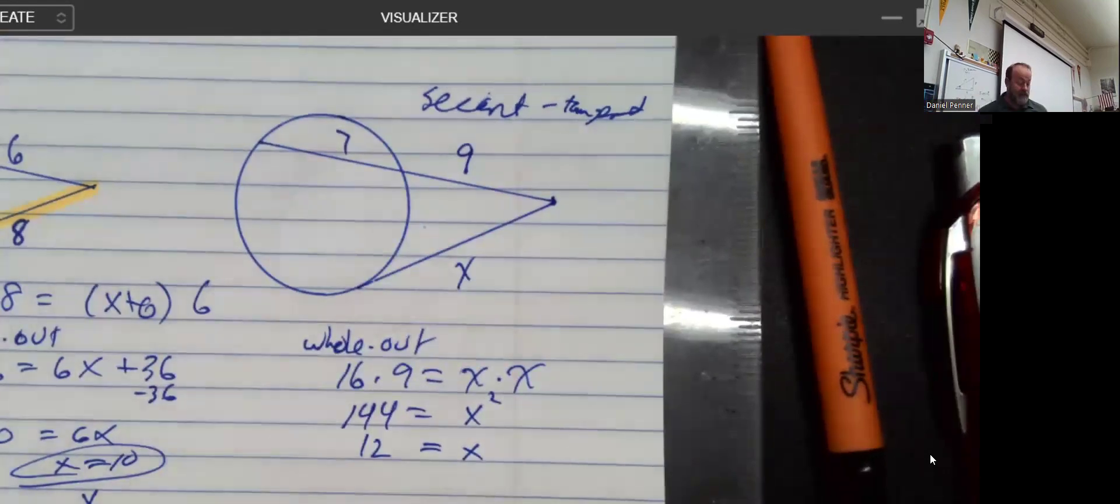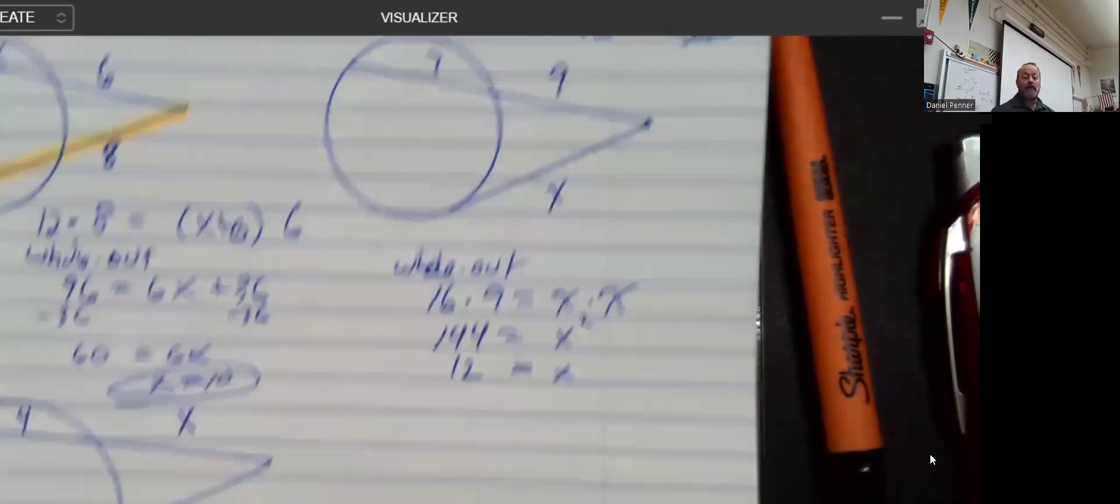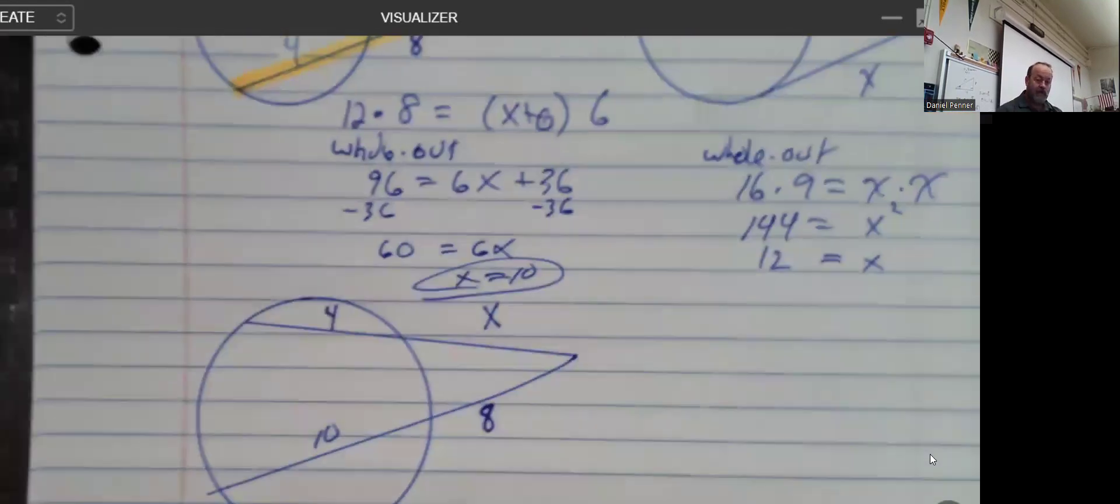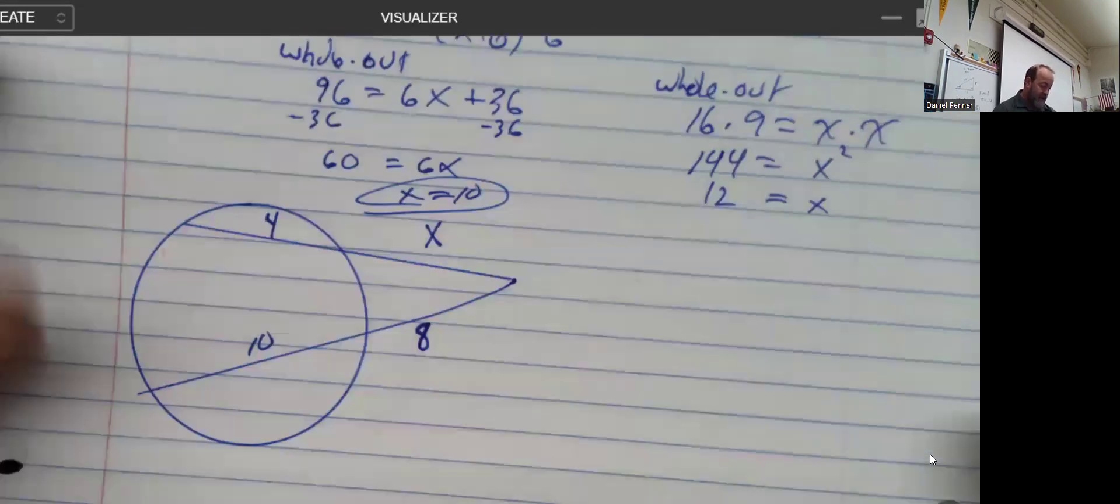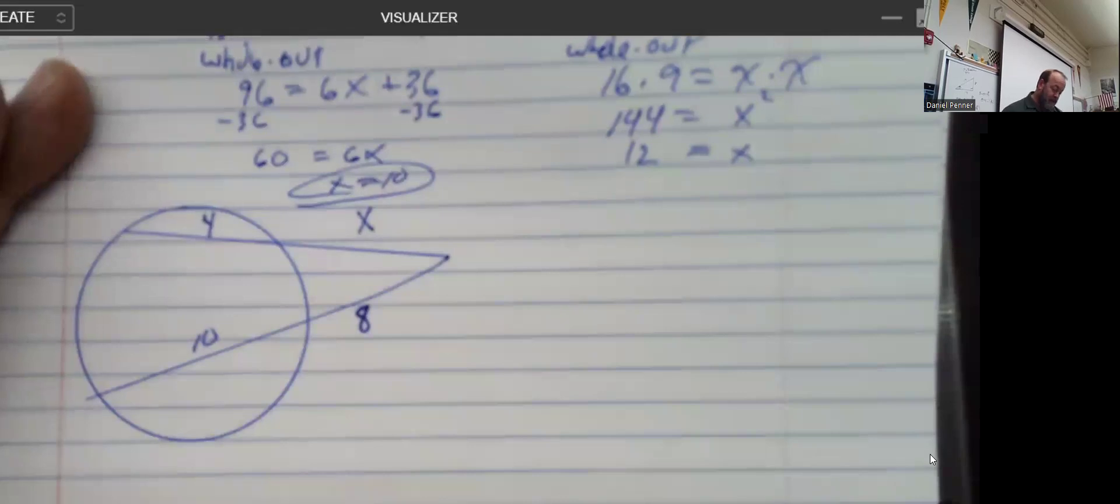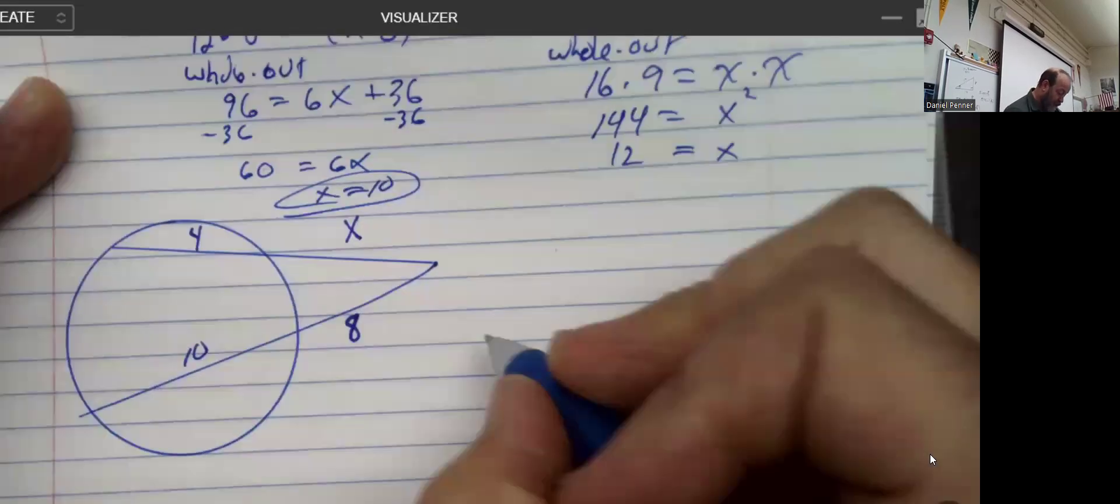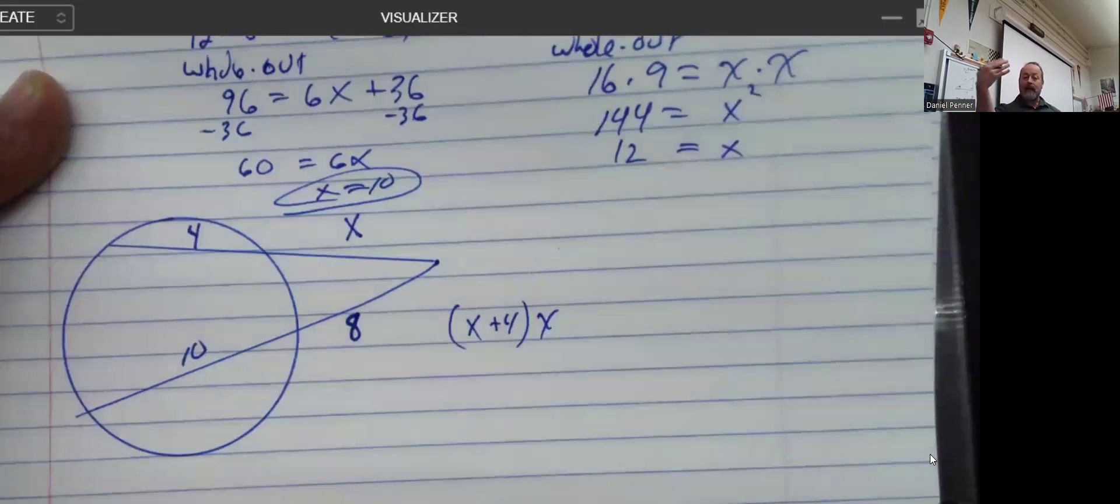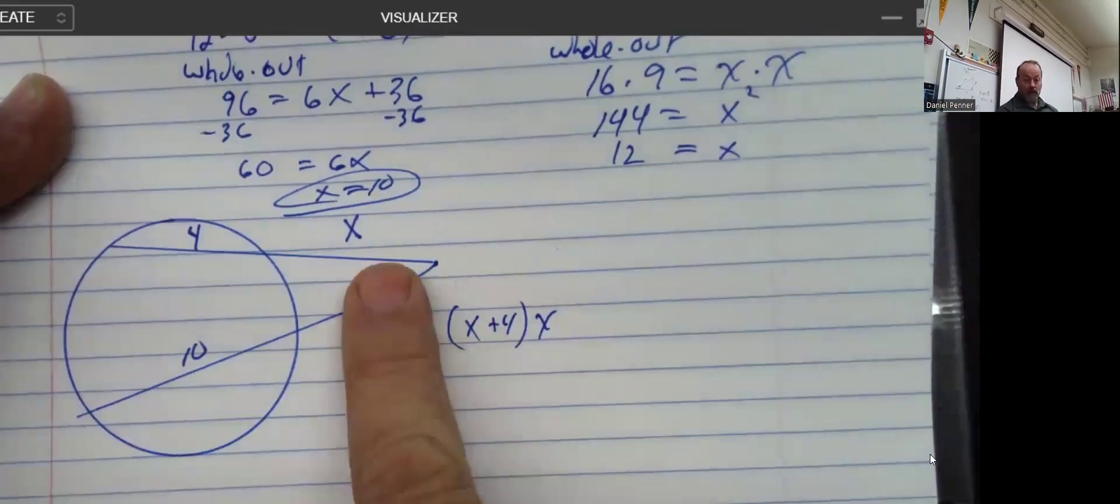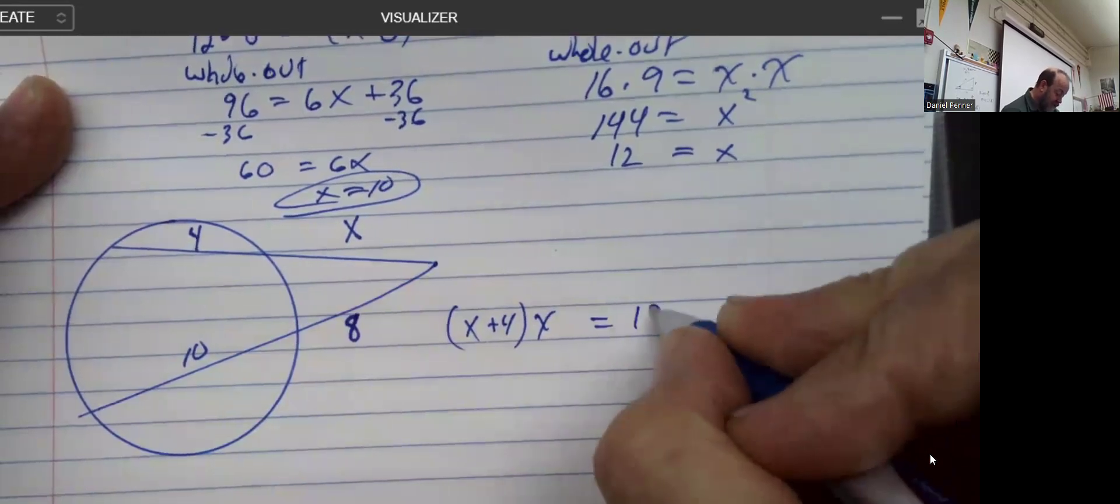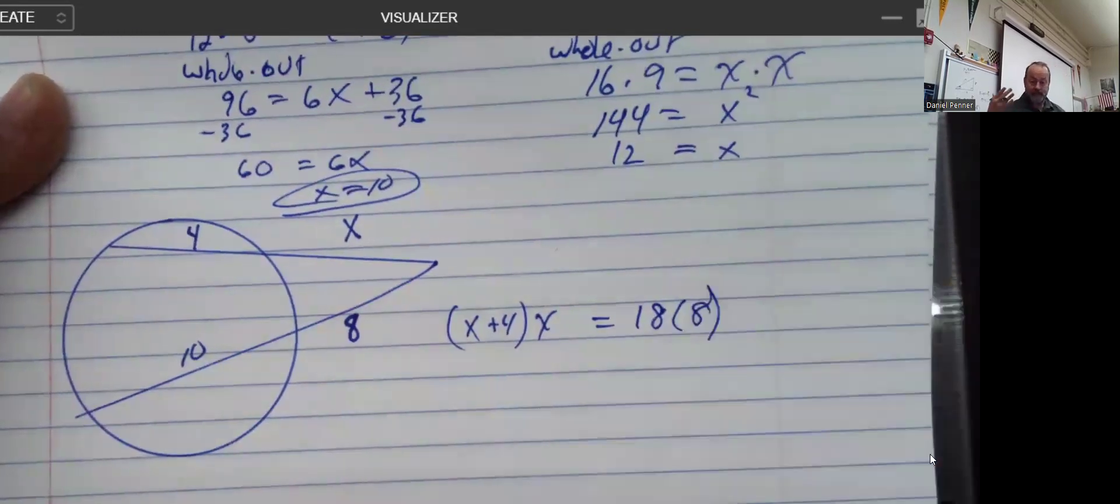So sometimes they're pretty easy. This one right here I wanted to highlight is actually the hardest problem, and in fact, the one that is the toughest to get. And so I will slow down on this one a little bit. So again, if I start with the whole thing, which is X plus 4, the worst thing is when somebody leaves that outer portion right here alone is equal to the whole thing, which is 18, times the outside piece, which is, again, 8.